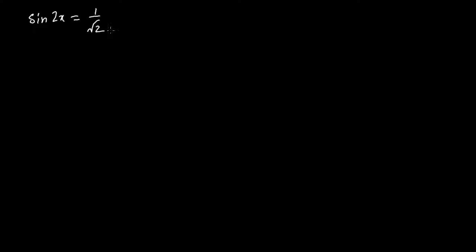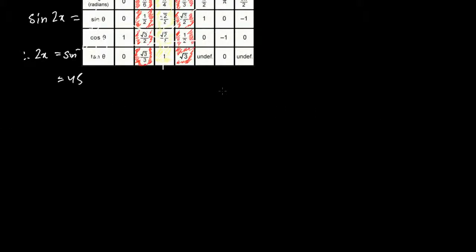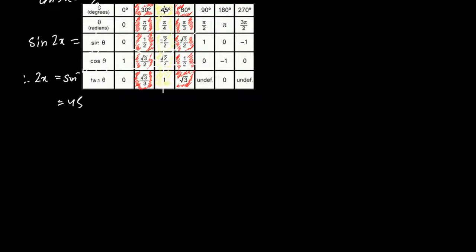Example: sine(2x) = 1/√2. Since it is positive, it falls in the first and second quadrants. The basic angle is found using 2x = sine inverse of 1/√2. Note you cannot break the 2x — just like in a compound angle. 1/√2 and √2/2 are the same thing (rationalized format), and sine inverse of 1/√2 is 45 degrees.